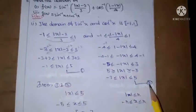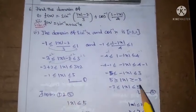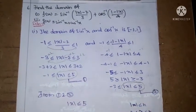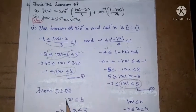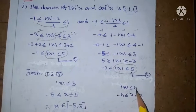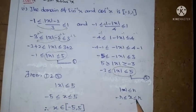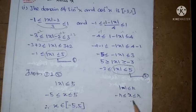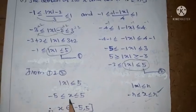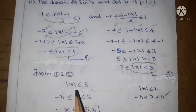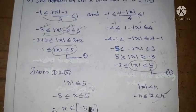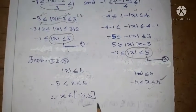From equation 1 and equation 2, taking the common region, modulus of x less than or equal to 5. Since modulus of x less than or equal to r implies minus r less than or equal to x less than or equal to r, the condition gives minus 5 less than or equal to x less than or equal to 5. So the domain of f of x is the closed interval minus 5 to 5.